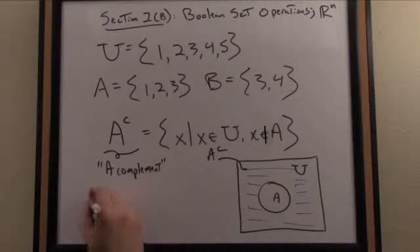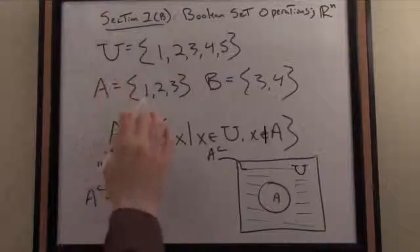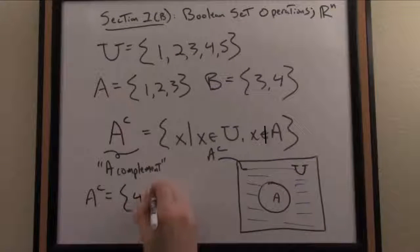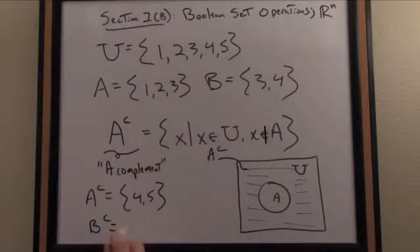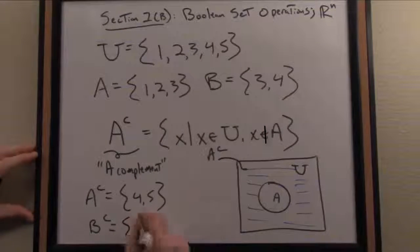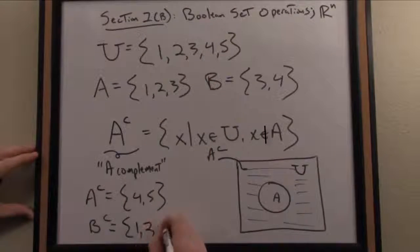For our particular examples, A complement is everything not in A but in our universe. So we have {1, 2, 3} in A. Anything not in it would consist of {4, 5}. Similarly, B complement—everything not in B but in our universe—would consist of the set {1, 2, 5}.